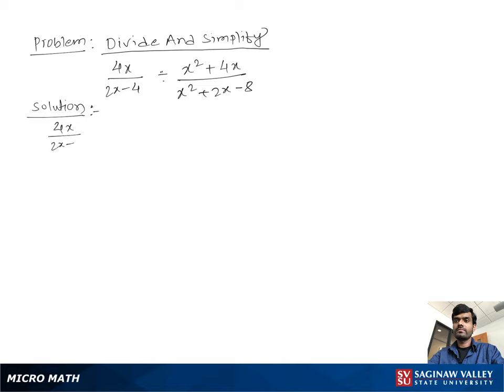Let's write the problem again. 4x over 2x minus 4 divided by x square plus 4x over x square plus 2x minus 8.